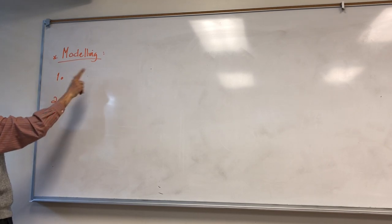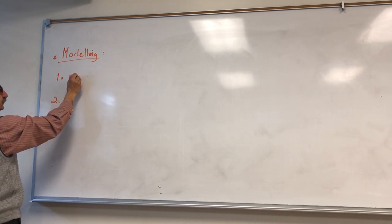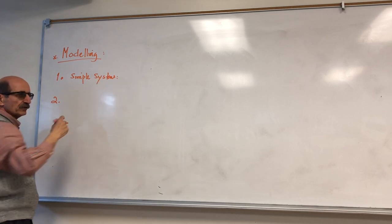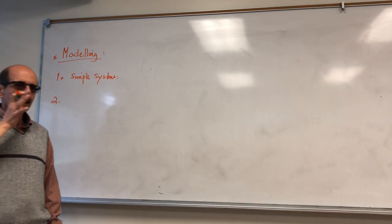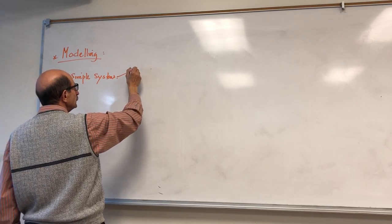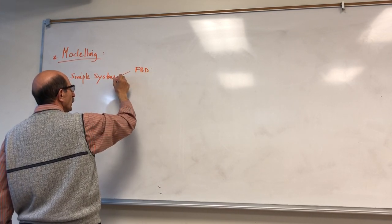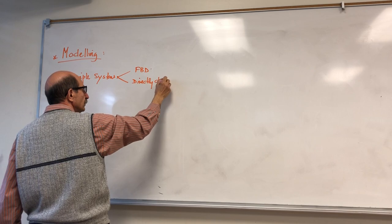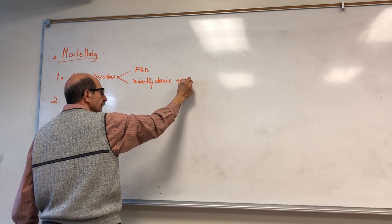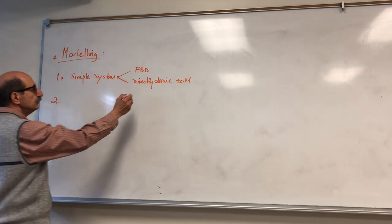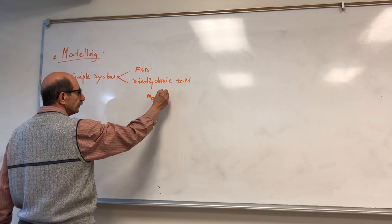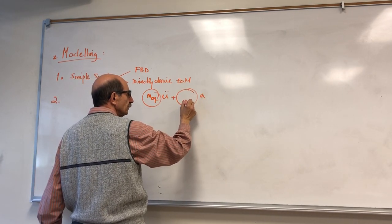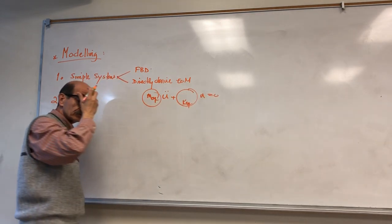So we covered two approaches. One we call simple systems — these are systems where mass is clear, stiffness is clear, so relatively easy. We can just set up a free body diagram and directly derive the equation of motion. Whatever this term is would be your mass equivalent, and the coefficient of u would be your k equivalent. That was approach number one.